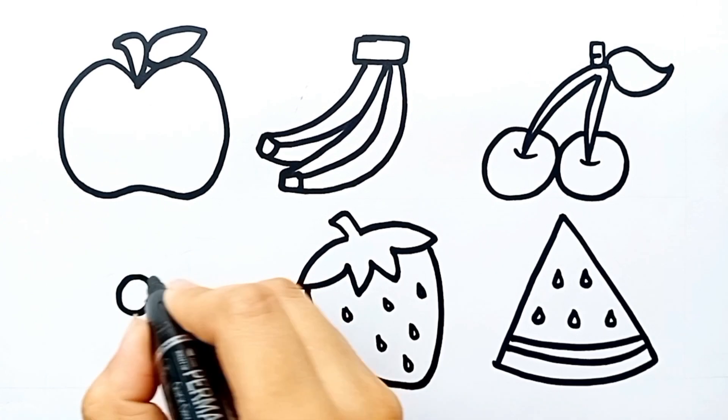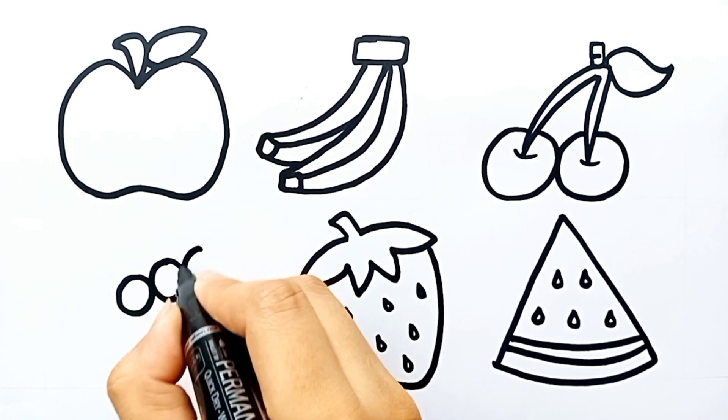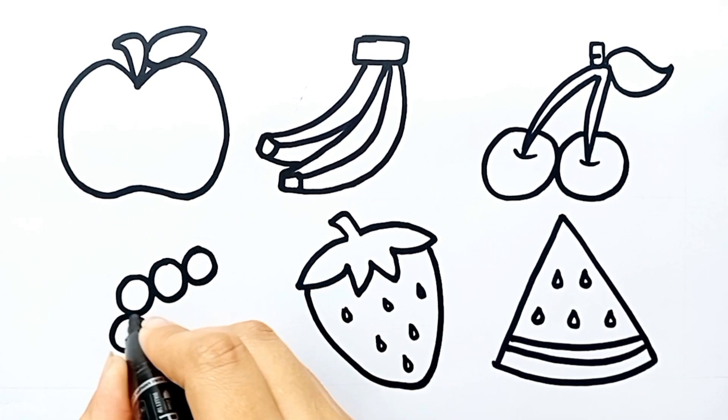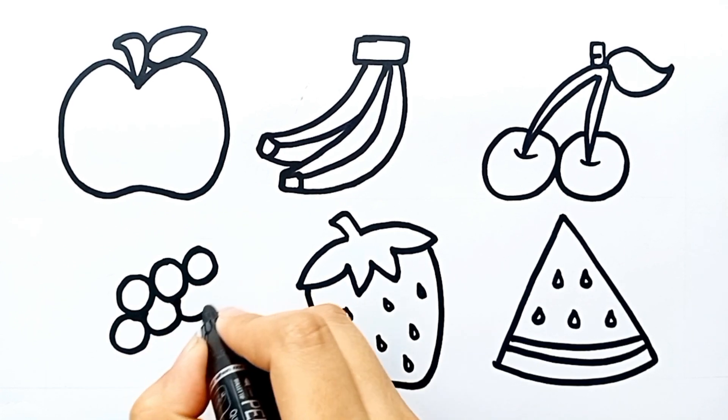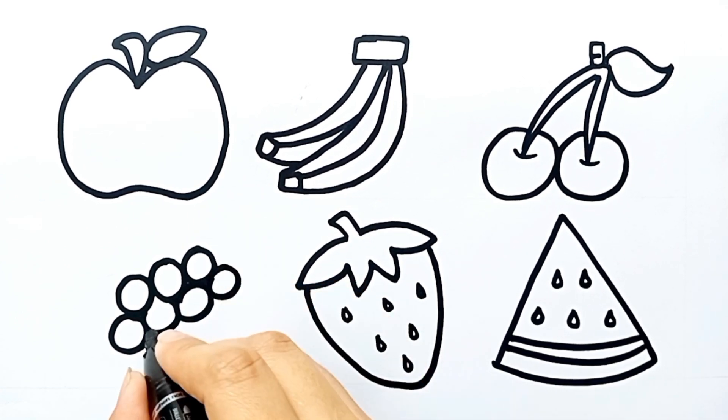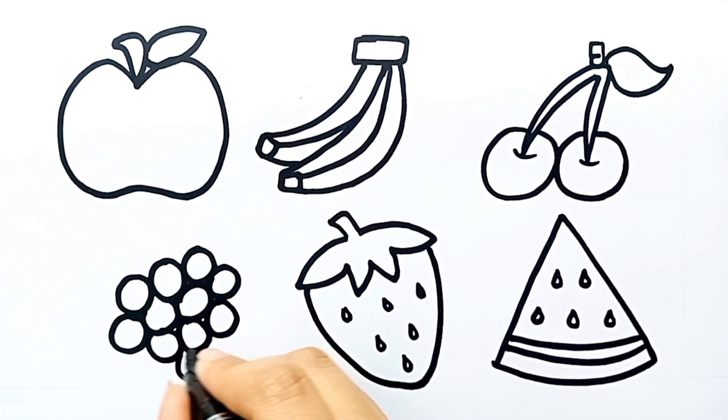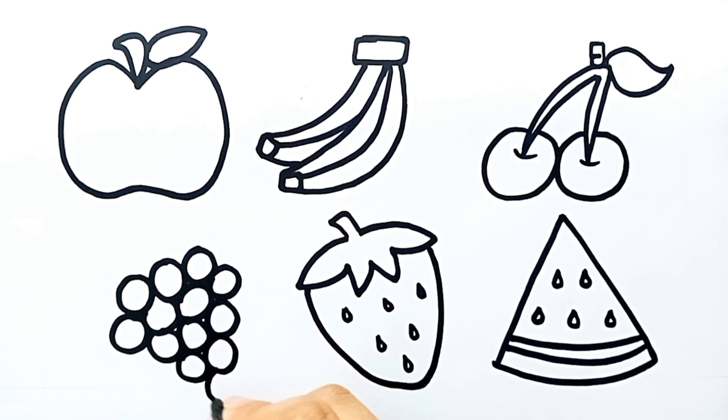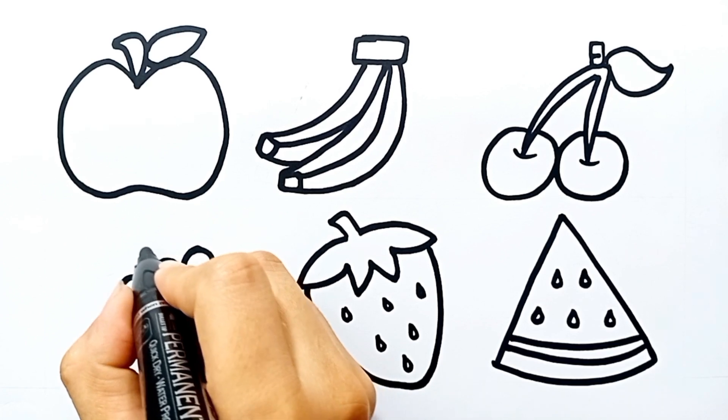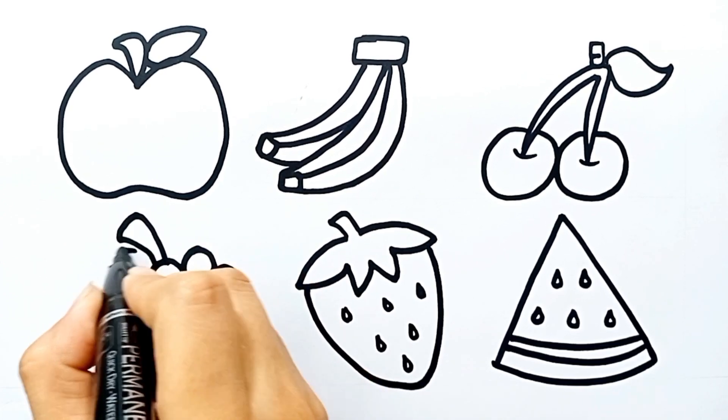Now I am drawing bunch of grapes. In a bunch there are too many grapes. Here is the leaf.